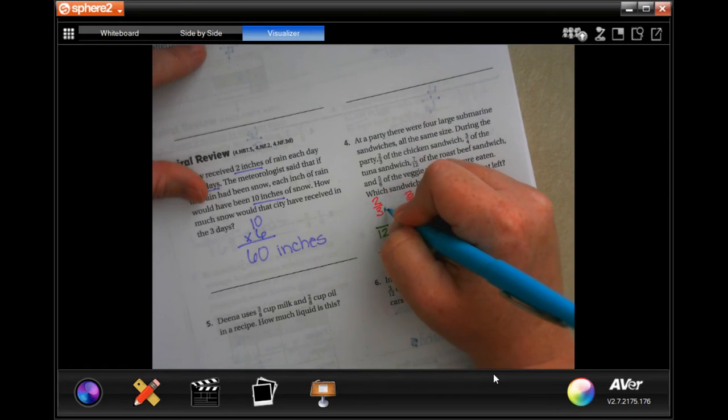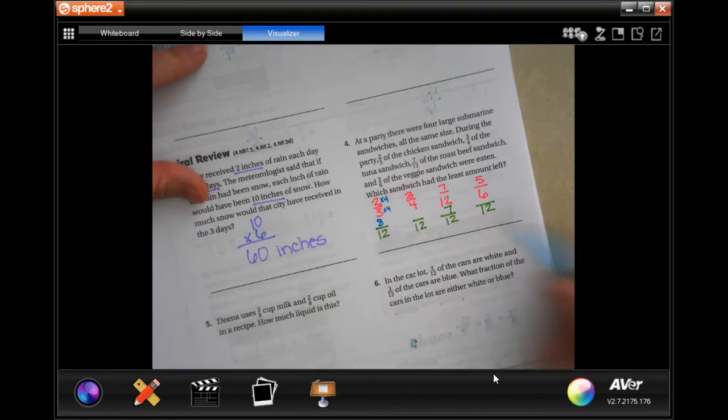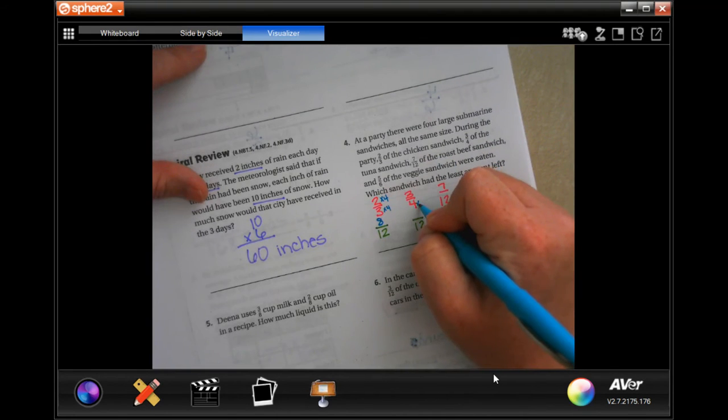This one, I had to multiply this by 4, so I need to multiply this by 4. 3 times 4 is 12, 2 times 4 is 8. This one, I need to multiply this by 3, so 4 times 3 is 12, 3 times 3 is 9.